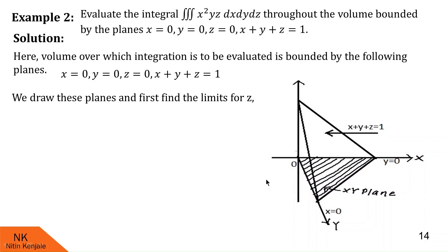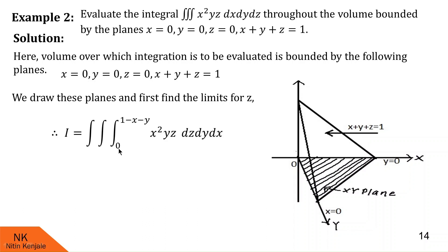x=0 is the yz-plane, y=0 is this plane, and z=0 is the xy-plane. Now let us find the limits for z. We throw arrows parallel to the z-axis from bottom to top. They enter the volume by crossing the bottom xy-plane (z=0), so z=0 is the lower limit for the inside integral. They leave by crossing the tilted plane x+y+z=1, giving z=1−x−y. So 1−x−y is the upper limit for z, and the inside integral has limits 0 to 1−x−y.